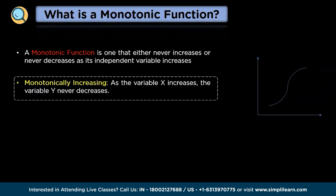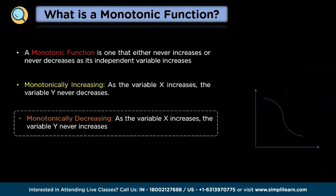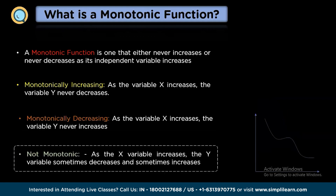The first type is monotonically increasing: as variable x increases, variable y never decreases. The second is monotonically decreasing: as variable x increases, variable y never increases. The third is non-monotonic: as variable x increases, the variable y sometimes decreases and sometimes increases.